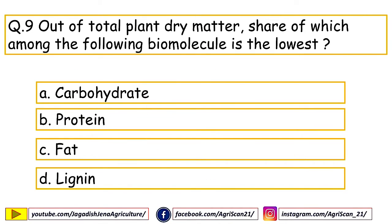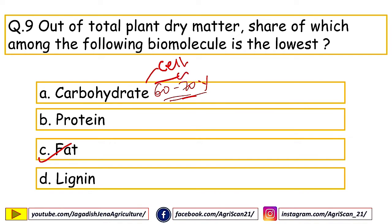Next question: out of total plant dry matter, which biomolecule has the lowest share? Options are carbohydrate, protein, fat, lignin. The right answer is fat. Carbohydrate — including cellulose and hemicellulose — makes up around 60–70%. Protein is around 8–10%. Fat and waxes combined are around 2%. Lignin accounts for 10–20%.